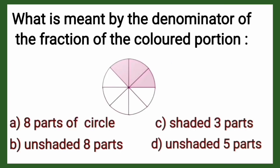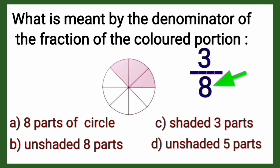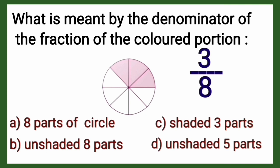Next question: what is meant by the denominator of the fraction of the colored portion? Look at this figure carefully. The total parts are 8 and the shaded parts are 3, so the fraction is 3/8. In this fraction, the denominator is 8, which represents the total parts, and 3 is the numerator representing the shaded portion. So the right answer is option A.